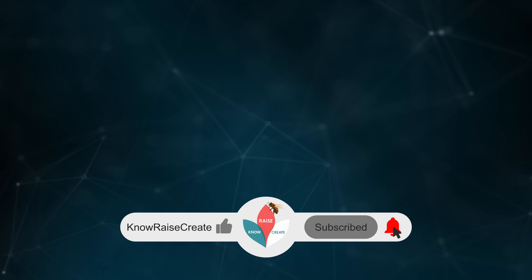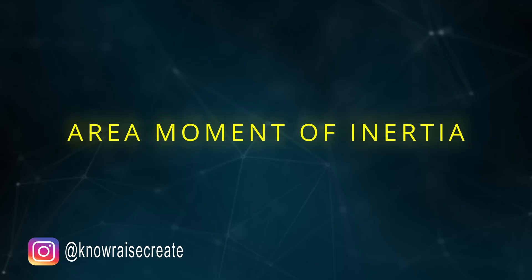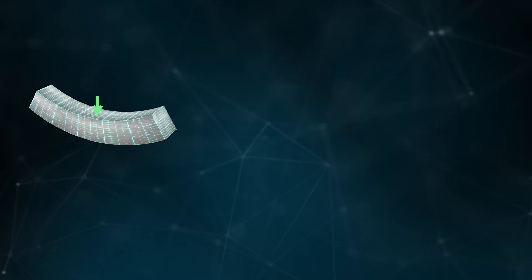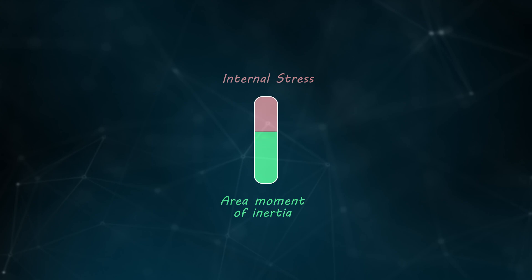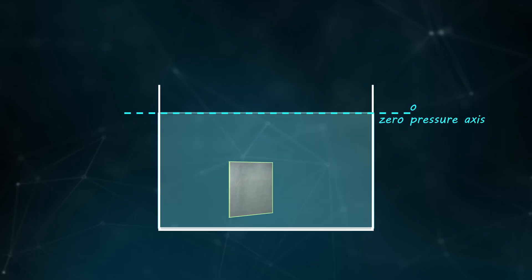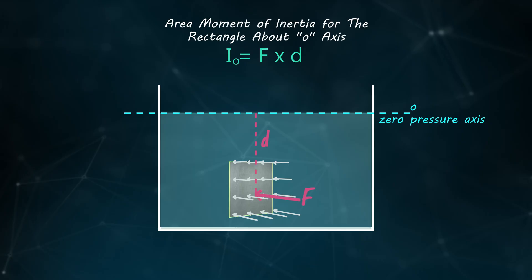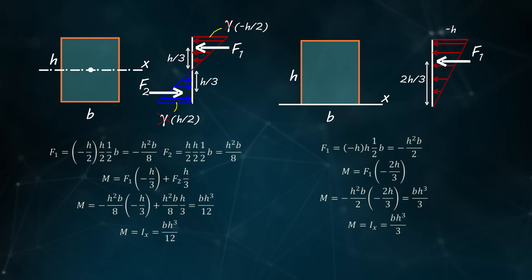We've arrived at a very important geometric property: the area moment of inertia, also called the second moment of area. It is effective in loading cases that cause bending — simple bending, eccentric axial loading, and buckling — and also determines torsional behavior. As its value increases, stress levels decrease and the body becomes less sensitive to loading. The area moment of inertia is related to the moment about the zero-pressure axis produced by hydrostatic pressure on a submerged area. For a rectangle, it equals bh³/12 about the centroidal axis and bh³/3 about the axis through the base.